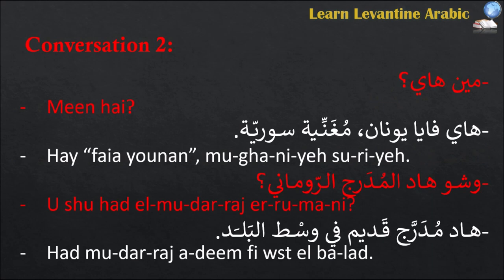Conversation two: You're walking down the street in Amman, Jordan with your Jordanian friend and you come across a poster of an artist advertising her concert at the Roman amphitheater. You ask your friend: مين هاي؟ — your friend replies: هاي فايا يونان، مغنية سورية. And you ask: وشو هاد المدرج الروماني؟ — هاد مدرج قديم في وسط البلد.